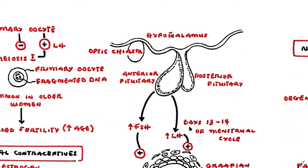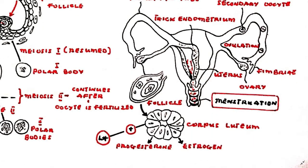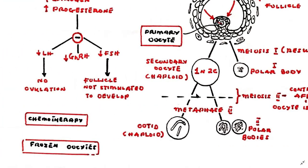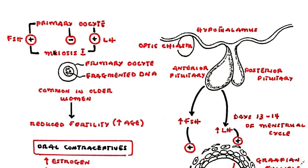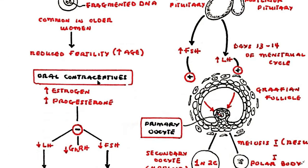Hormone production ceases and menstruation begins as the thickened endometrium is shed. The primary oocyte may be arrested in meiosis 1 throughout life for about 40 to 50 years if not triggered to continue development. DNA fragmentation in stored oocytes is more common in older women as DNA damage increases with time, which may be the reason for reduced fertility with increasing age. Knowledge of the effects of sex hormones on follicle development has allowed invention of the oral contraceptive pill.